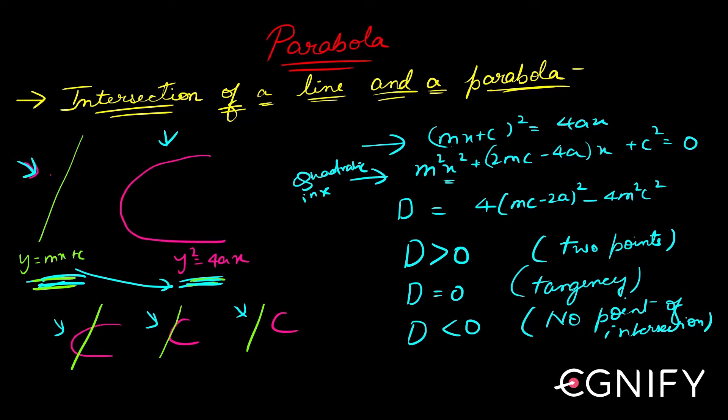So for that we need to evaluate the discriminant. The discriminant is this from this quadratic. If this discriminant is greater than zero, then the line and the parabola will intersect in two points. If this discriminant is equal to zero, it will just touch—that is basically the condition for tangency. We will also see in tangents. And the third one is, this discriminant is less than zero—the line and the parabola will be away.